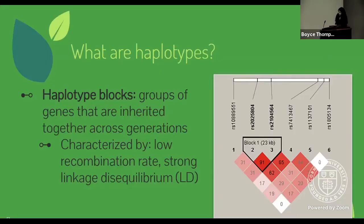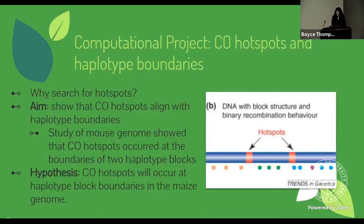Haplotype blocks are groups of genes that are inherited together across generations. Their most prominent characteristics are a low recombination rate and high linkage disequilibrium (LD). In this diagram, the darker red blocks have high LD, indicating they are haplotypes. A prior study of the mouse genome showed that hotspots occurred at the boundaries of two haplotype blocks. Our hypothesis was that hotspots should also occur at haplotype block boundaries in the maize genome.